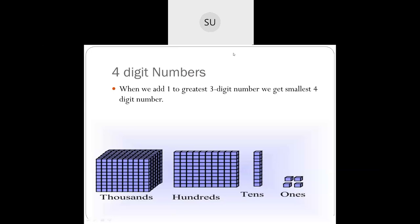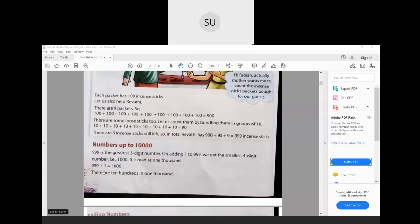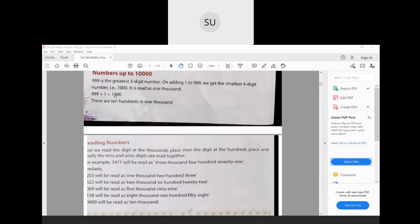Now, how do you get 10,000? When you add 1 to the greatest 4-digit number you will get 10,000. The greatest 4-digit number is 9999, so when I add 1 to it I get 10,000, which is the smallest 5-digit number. So 999 plus 1 equals 1000, and there are 10 hundreds in 1000.